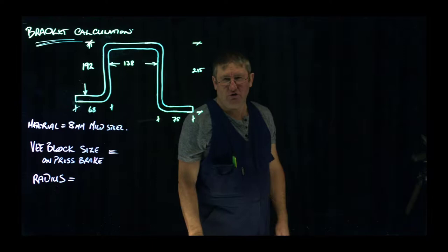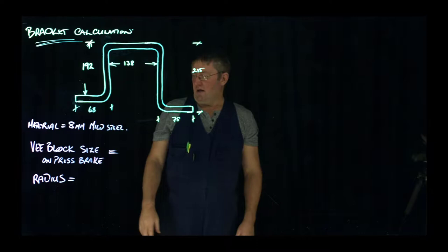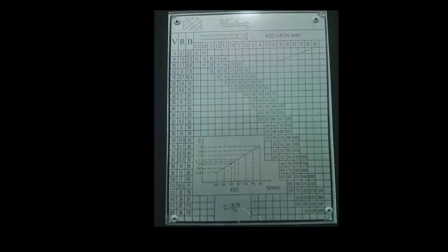So mild steel, 8mm. We need to determine the V-block size. It's going to be formed up on a press brake. And what we need is the V-block size and that will give us the radius. So we're just going to work that out.